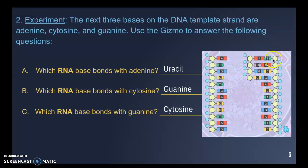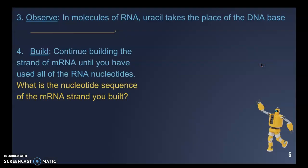Continuing the process, the next three bases you should have gotten are uracil, guanine, and cytosine. In number three, observe that in RNA molecules uracil takes the place of the DNA base thymine — the U replaces T. That's one way to know the difference between a DNA strand and an RNA strand.